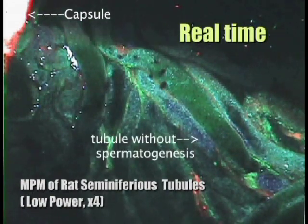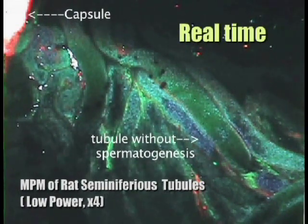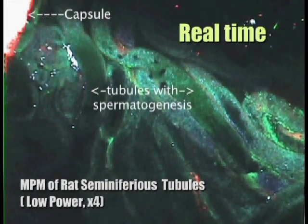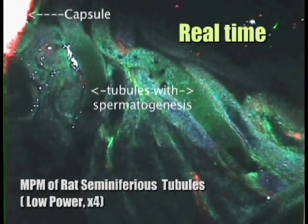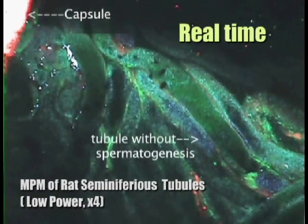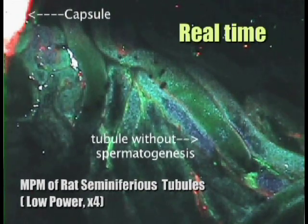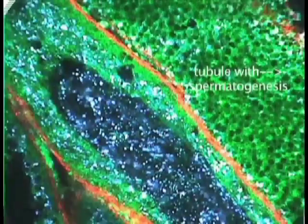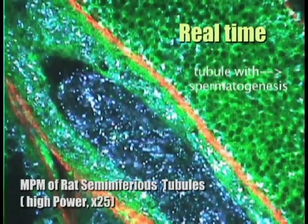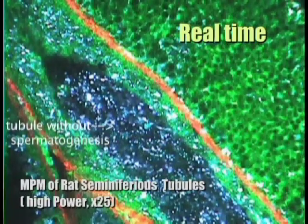This video segment reflects the real-time imaging of the testes under MPM at low magnification, 4X. Shown on the left top corner is the capsule. The two tubules with spermatogenesis are evident in the middle, whereas the tubules in between are smaller and most likely contain Sertoli cell only histology. Under high magnification at 25 times, we see the tubule on the right with spermatogenesis, and the tubule on the left without spermatogenesis.